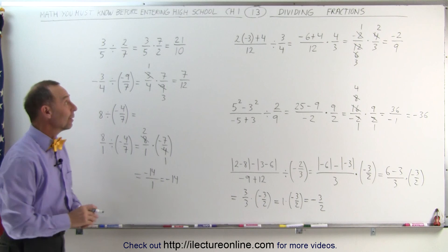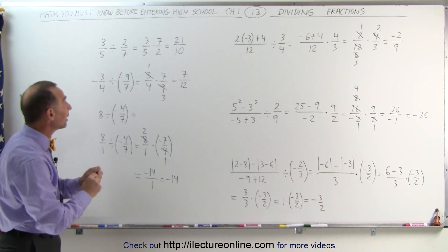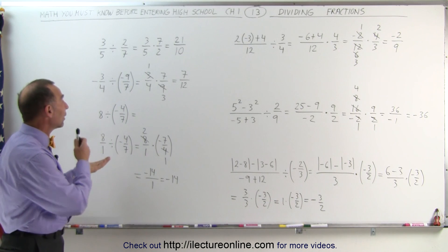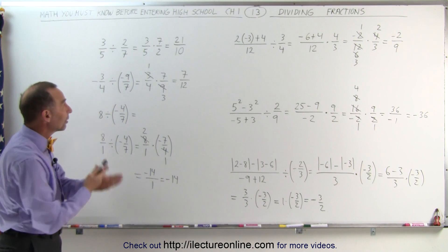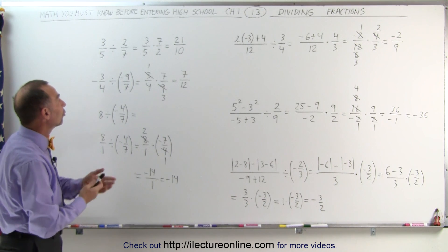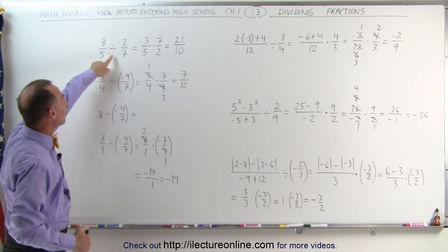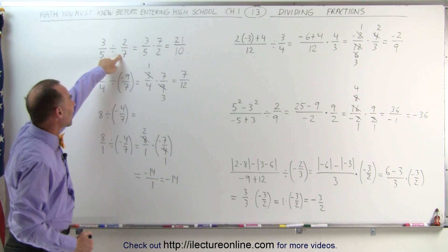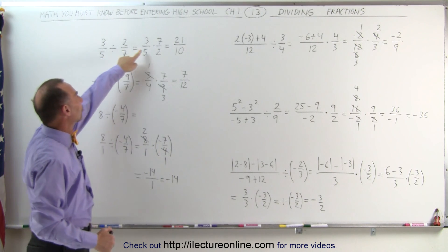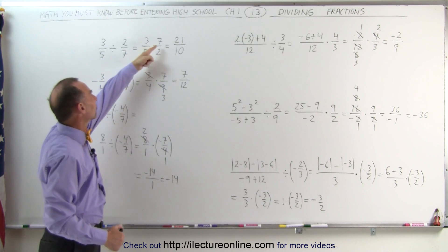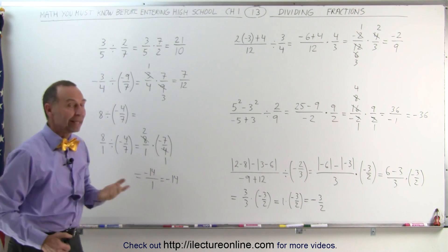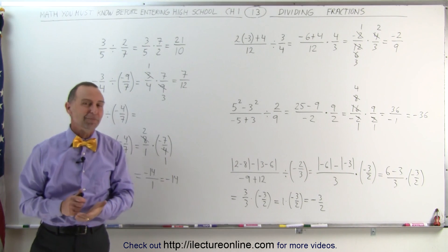And that's how we operate with dividing one fraction by another fraction. The rule is always: when we divide by a fraction, we actually multiply by its inverse. And that's how it's done.